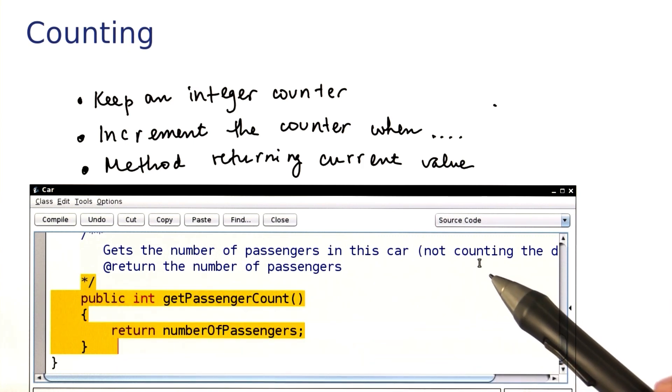In this example, we just counted the number of passengers. What if we wanted to know who's actually in the car? We'll turn to that next.